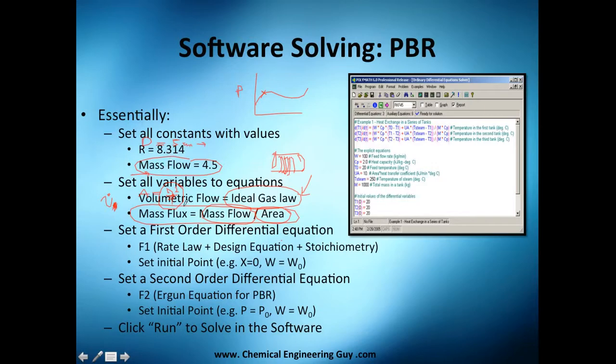Now, once you've set all the variables or equations, we need to set our first order differential equation. What's that? It's essentially F1. The one we get from our design equation and the rate law. So here it is, rate law, the design equation of the PBR. And, of course, with stoichiometric values. Set the initial point. Normally, we're going to be setting this point to x as x equals zero. The initial mass will be, of course, W zero, which normally is, of course, zero.